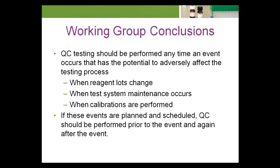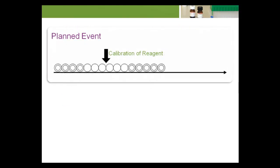If these events are planned and scheduled, QC should be performed prior to the event and again after the event. Testing QC samples just prior to the event provides the laboratory a level of assurance that the patient results produced since the last QC testing up to the time of the event are acceptable. Testing QC samples immediately after the event gives the laboratory a level of assurance that the test system is in control prior to resuming the testing of patient specimens.